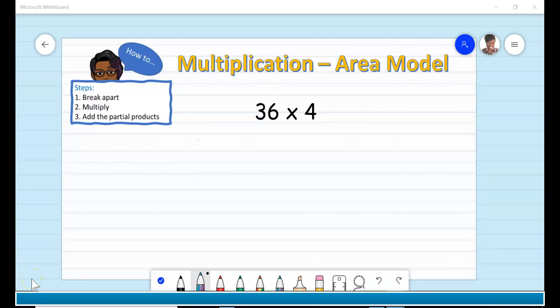So let's get into it. Here we have 36 times 4. We will begin by breaking up the 36 into smaller, friendlier numbers that will make it easier to multiply. Now parents, keep in mind, remind your child that factors can be broken up in many different ways to make partial products, which are then combined.